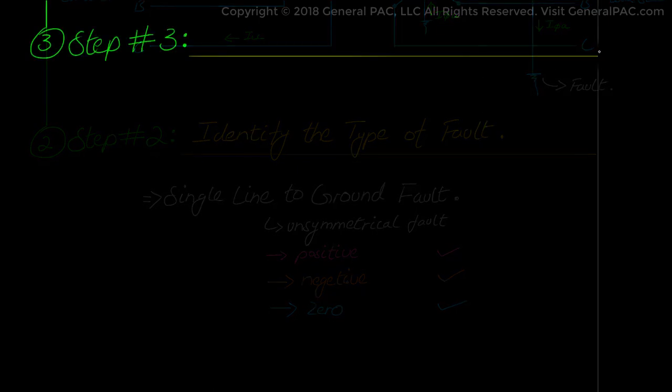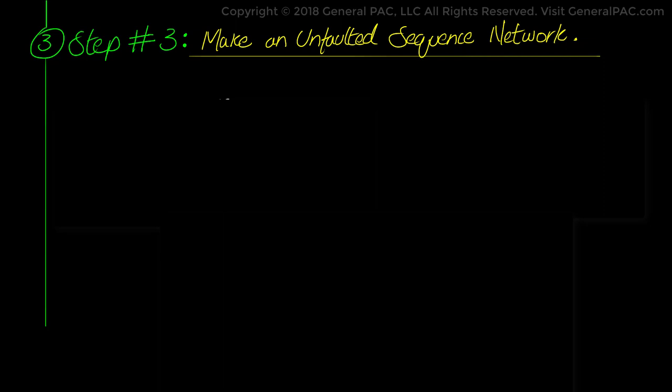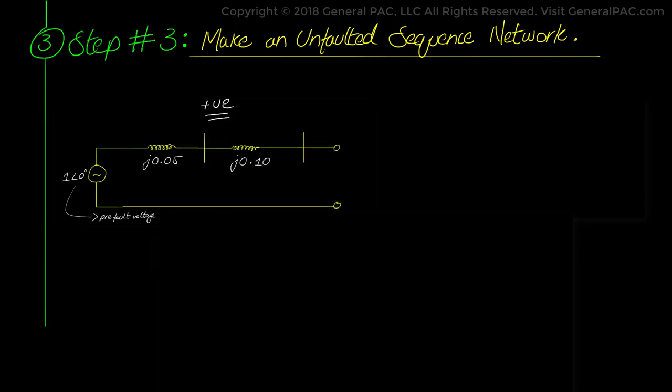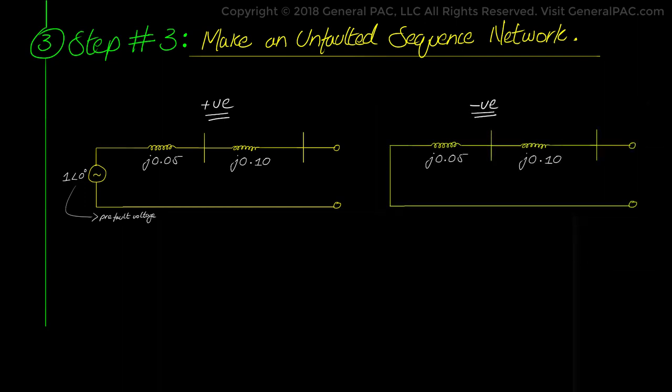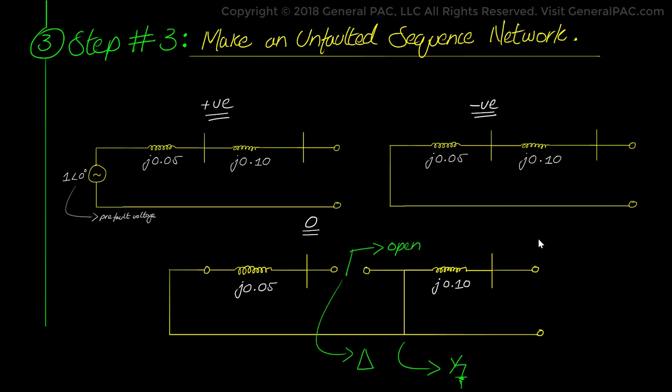Next we move to step number 3, which asks us to make an unfaulted sequence network from the per unit converted system in step 1. These are the individual sequence network diagrams which were converted in Part 2c of the series. Here we redraw the same networks. The positive sequence network diagram is indicated by the voltage source. The negative sequence network diagram is very similar but does not have a voltage source. The zero sequence network represents the delta-Y transformer with the high voltage side open and the low voltage side grounded.